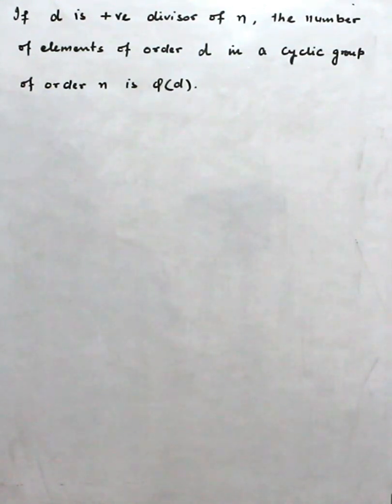If d is a positive divisor of n, the number of elements of order d in a cyclic group of order n is φ(d).